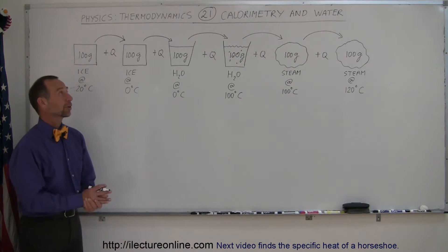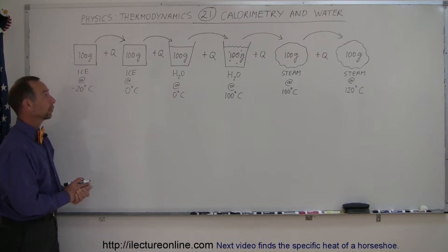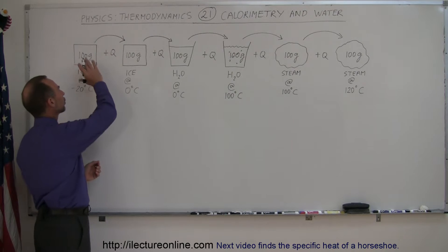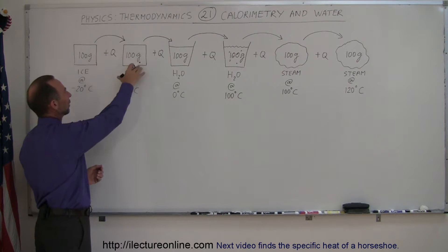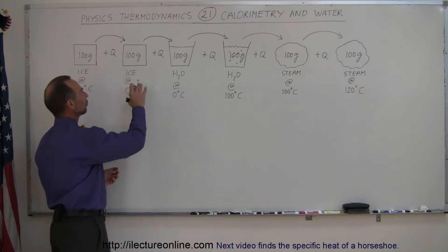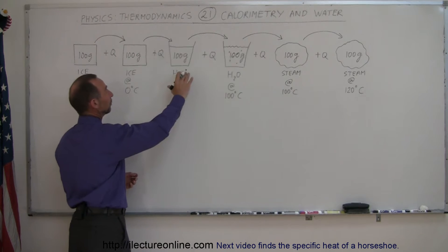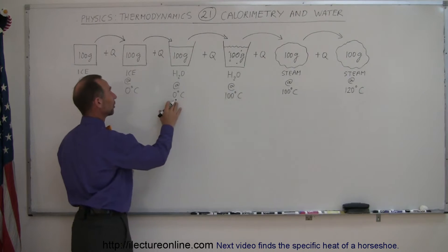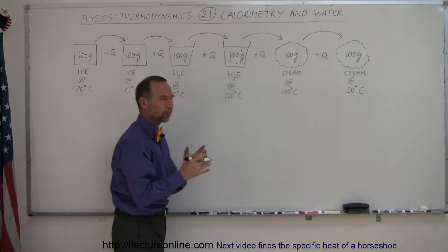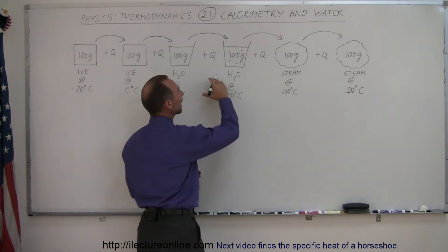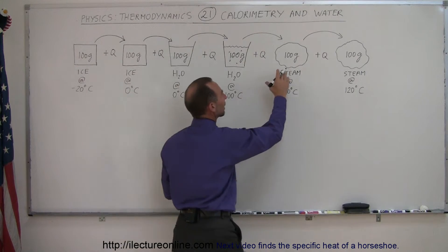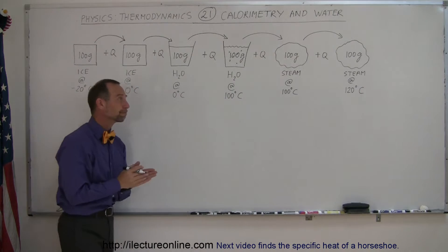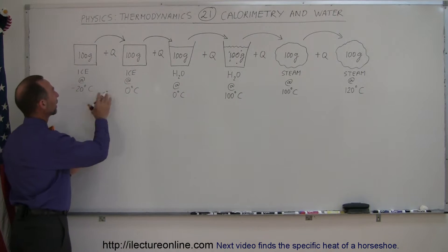Welcome to our lecture. Now we're going to look at some calorimetry, starting with how much heat it would take to take 100 grams of ice from -20°C up to 0°C, then change it from ice to water, raise the water from 0°C to 100°C, convert it into steam, and then heat the steam by another 20°C.